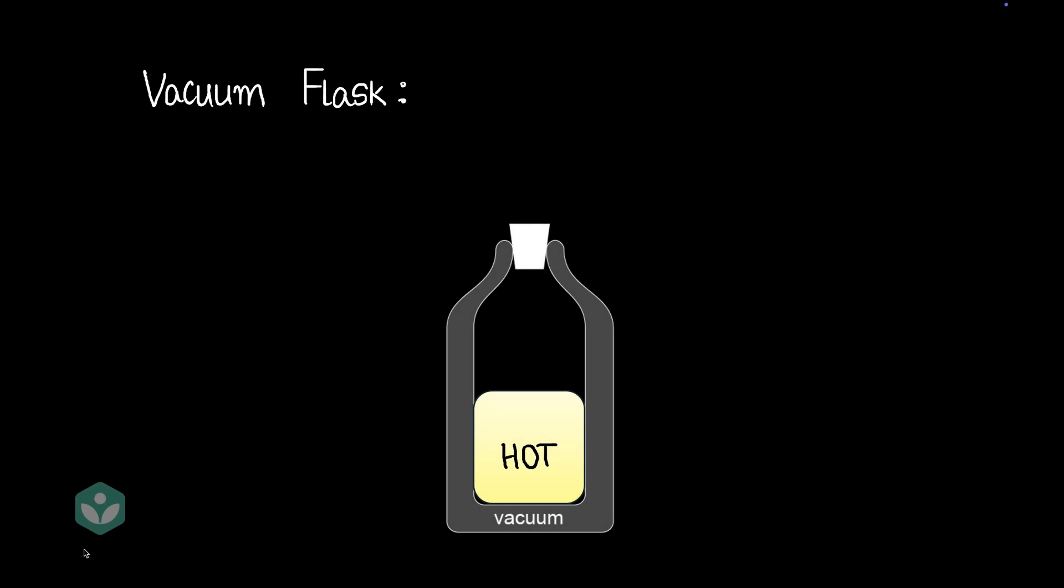Now, I'm sure you've studied that there are three ways of heat loss. The first is conduction. Let's see how a vacuum flask deals with conduction.